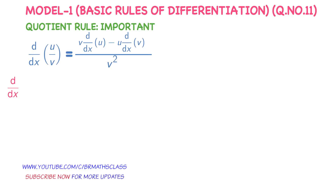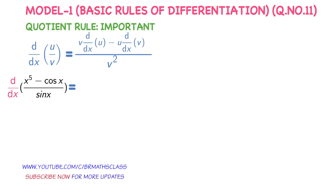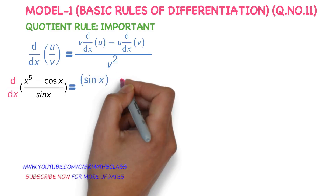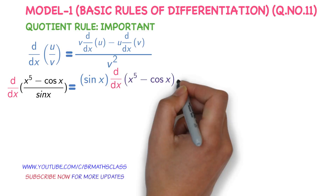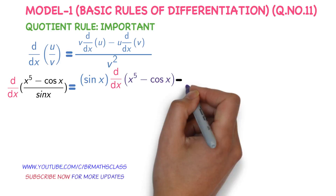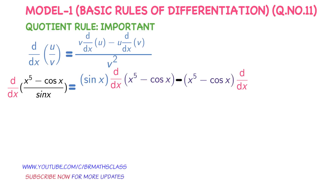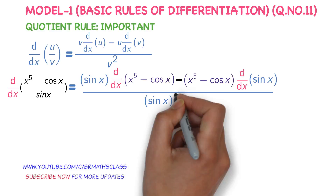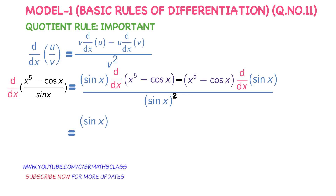We need to find the derivative of (x⁵ minus cos x) divided by sin x. Observe that this is of the form u/v. Applying the quotient rule: sin x times derivative of u, where u is x⁵ minus cos x, minus u times derivative of sin x, all divided by v squared, which is sin x whole squared.